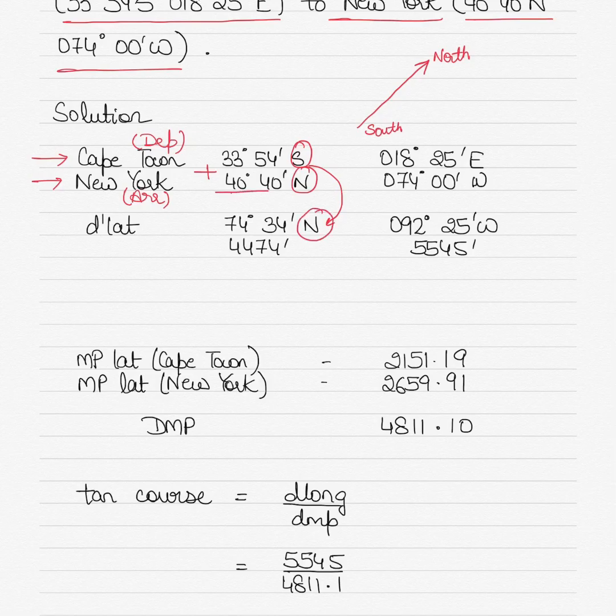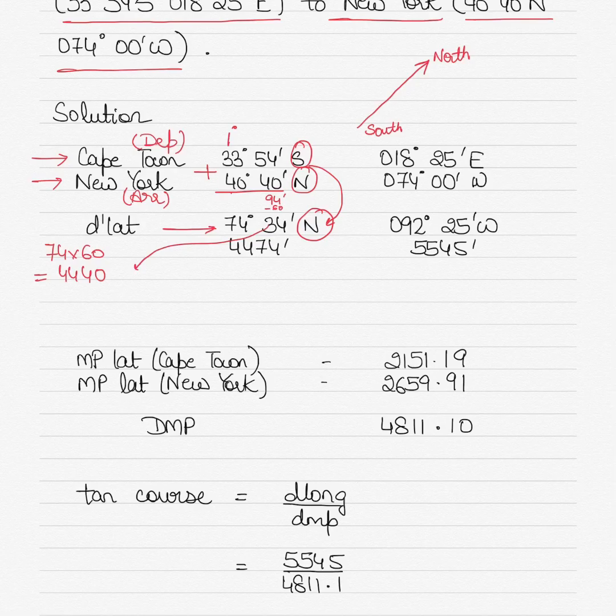From south you are going towards north, so of course you are going in a northerly direction. Your resulting D'lat would be north. When you add the two values together you get 74°34' north. Why 34? Because 54 plus 40 is 94, and you cannot have more than 60 minutes, so you subtract 60, which gives 1 degree here. So you get 74°34' north, or 4,474 minutes.